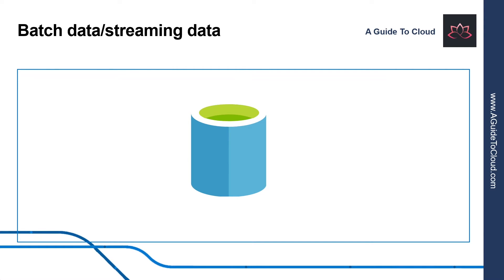Let's understand the difference between batch and streaming data. Data processing is simply the conversion of raw data to meaningful information through a process. Depending on how the data is ingested in your system, you could process each data item as it arrives, or buffer the raw data and process it in groups. Processing as it arrives is called streaming, and buffering and processing data in groups is called batch processing.